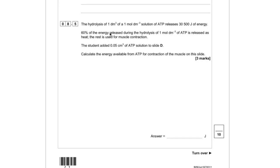So I'm going to go through it step by step. So the hydrolysis of one decimetre cubed of a one mole per decimetre cubed solution of ATP releases 30,500 joules of energy. So I think the best way to approach maths questions is to draw it out because there's lots of numbers and stuff here. And if you can visualise it, it helps make it a bit clearer.